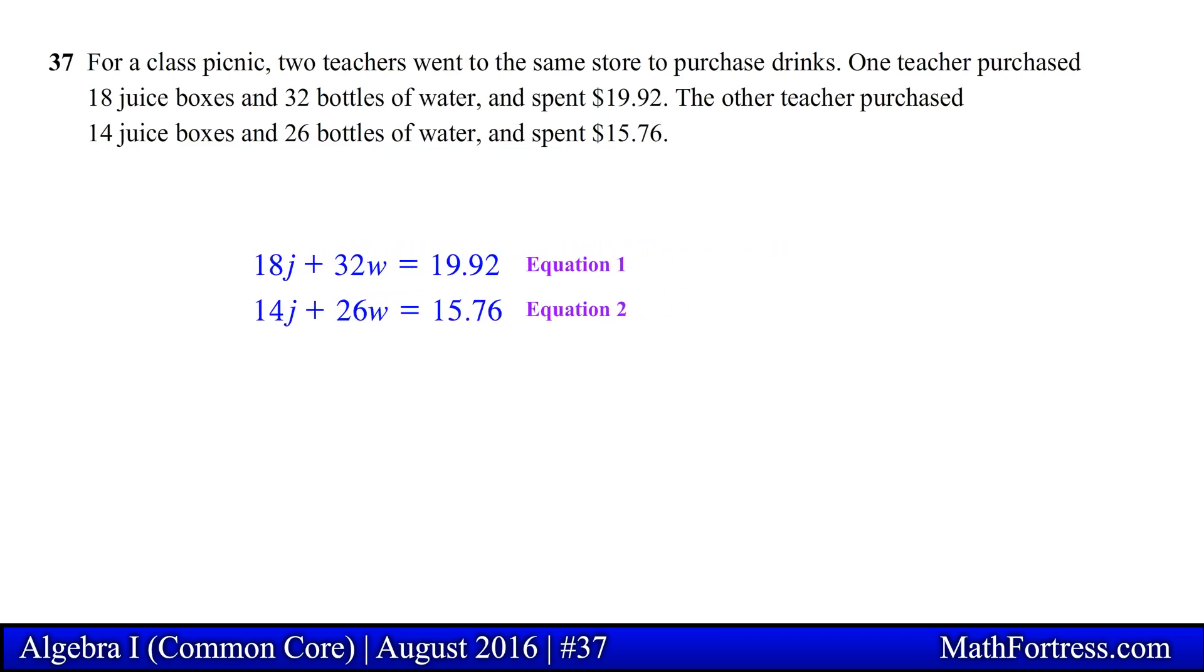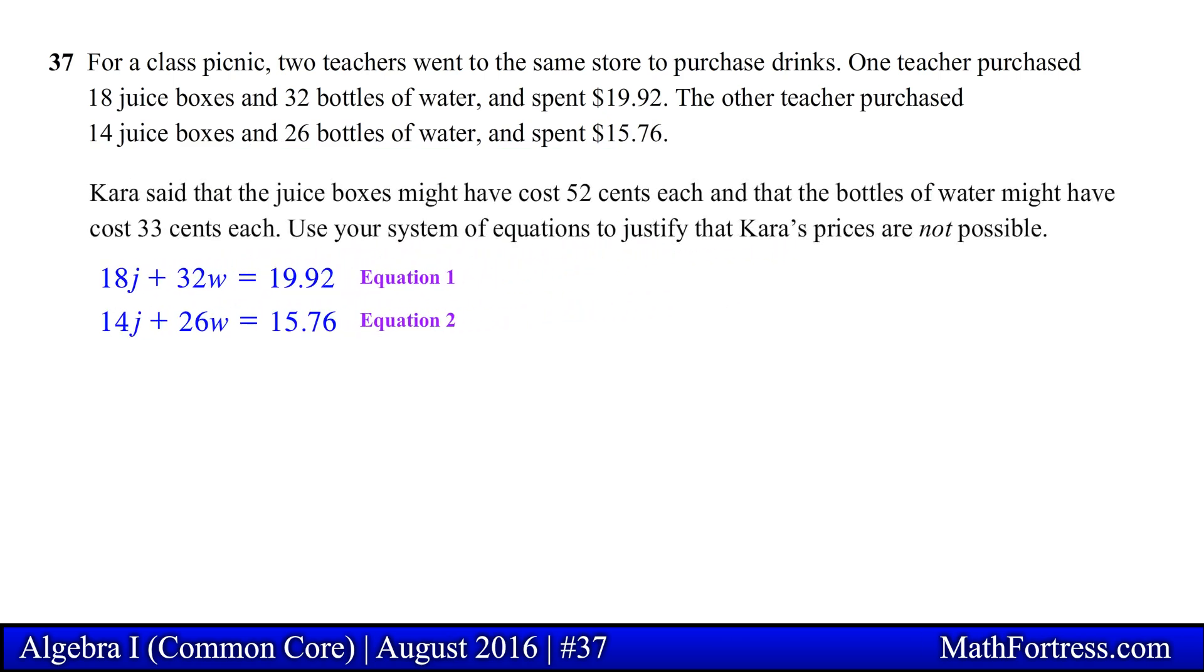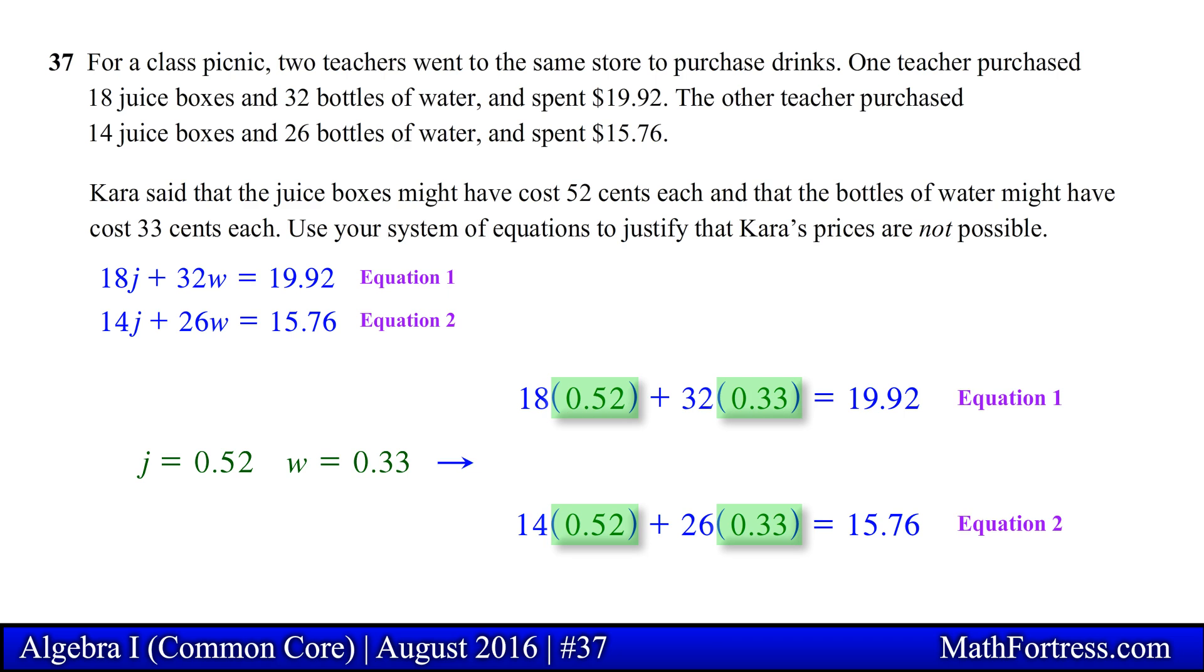Next we need to show that the juice boxes and the bottles of water did not cost 52 cents and 33 cents respectively. We can prove this by contradiction. Let's assume that a juice box and a bottle of water did cost 52 cents and 33 cents respectively. Then these prices should satisfy the system of equations that we wrote in the previous step. Substituting these prices into the first and second equation should yield a true statement for both equations.